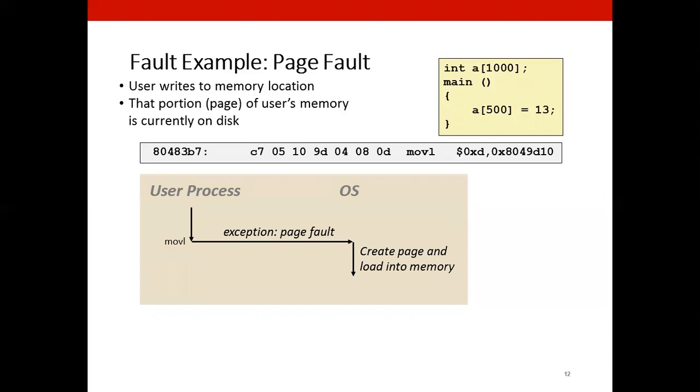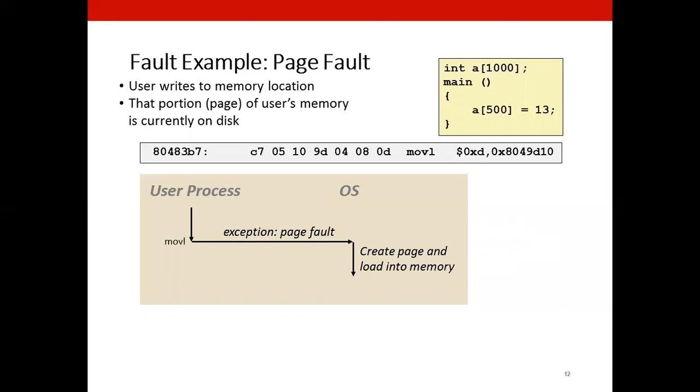So the operating system needs to provide the service and go to the disk, find that page and load it into the RAM. So here is the instruction. If it so happens that the page is not in memory, it leads to what we call a page fault exception. And that gives control to the operating system. The page handler must load the page into the physical memory and returns to the faulting instruction. Move L is executed again and it will be successful on second try if the operating system could map the page.